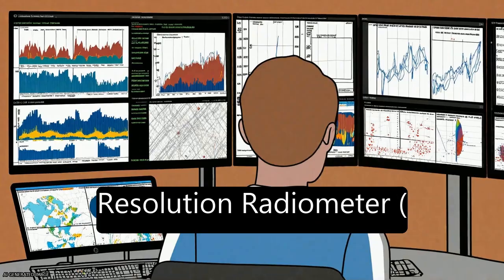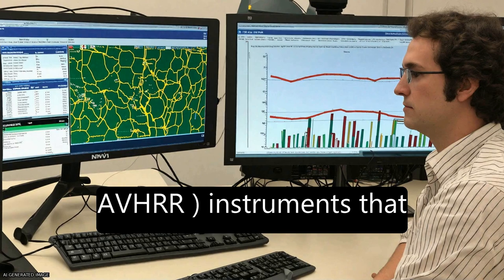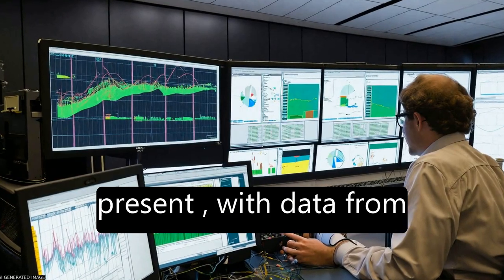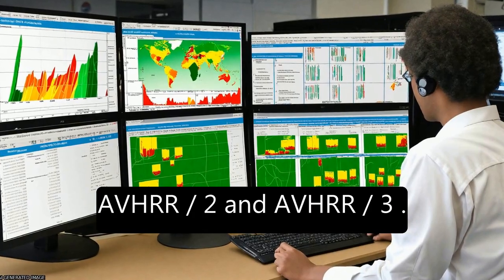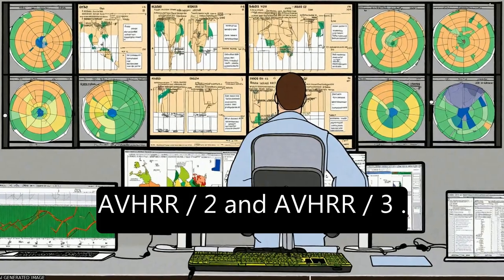The dataset extends from 1981 to the present with data from two different sensors, AVHRR-2 and AVHRR-3.